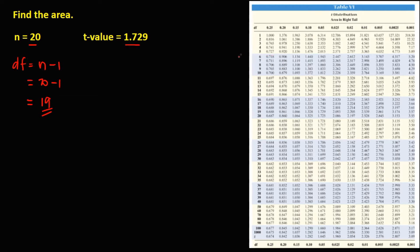Then using the T distribution table, we have degrees of freedom that's 19 and the T value that's 1.729. So look for 1.729 under degrees of freedom 19. This is 1.729, so therefore the area is 0.05.